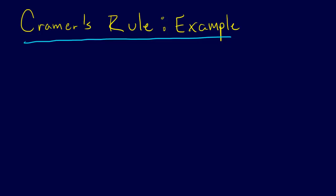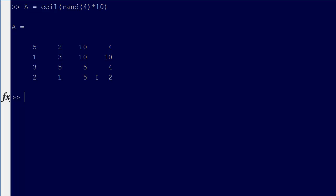Now I want to give an example of Cramer's Rule. In order to do this, we're going to take a matrix — let A equal — and I'm going to do this with a 3 by 3 matrix or a 4 by 4. Actually, let's switch over to MATLAB and generate a random matrix. That'll give us a random 4 by 4 matrix.